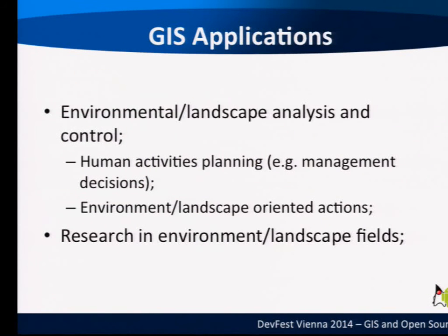What are the applications? We can sum them up in two points: environmental and landscape analysis and control, and activities planning and management decisions. GIS was used in the early 1960s for marketing decisions — it was actually used a lot for marketing purposes at the beginning. You might want to know how many people in your district are using a particular service, or how well you are penetrating a certain market.